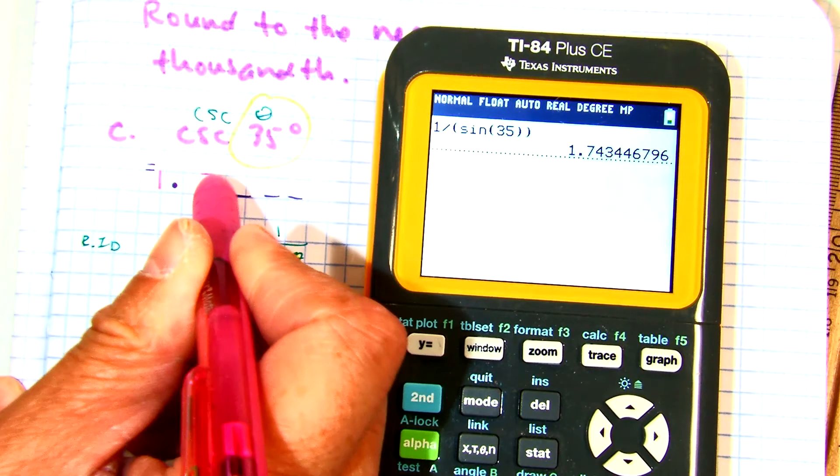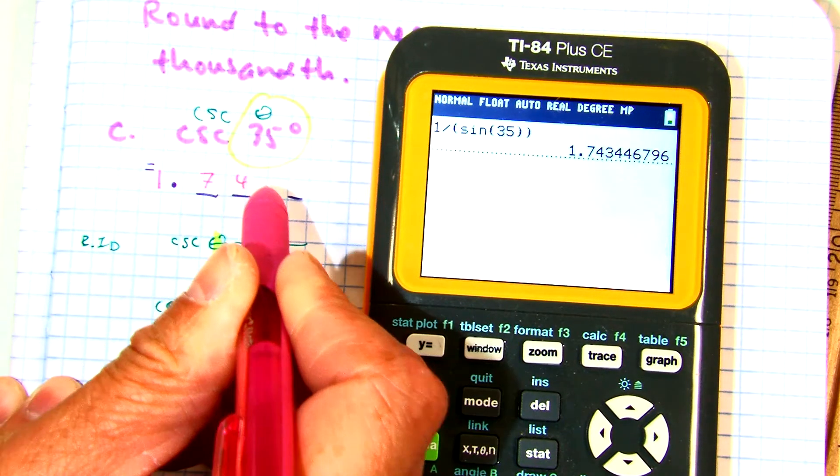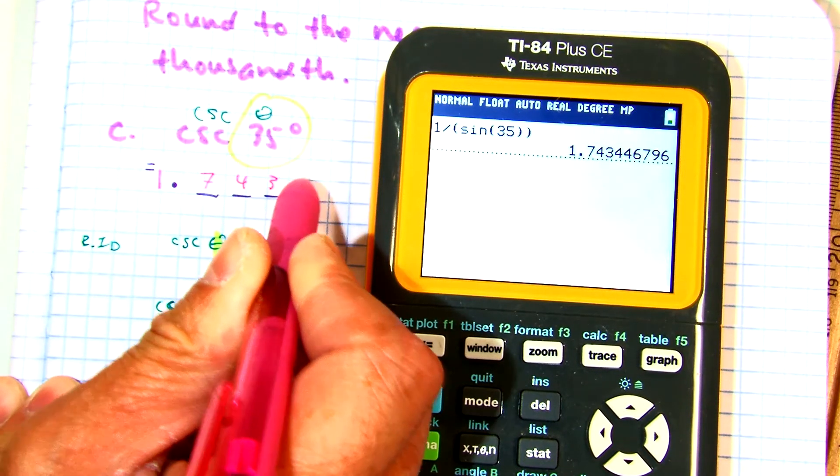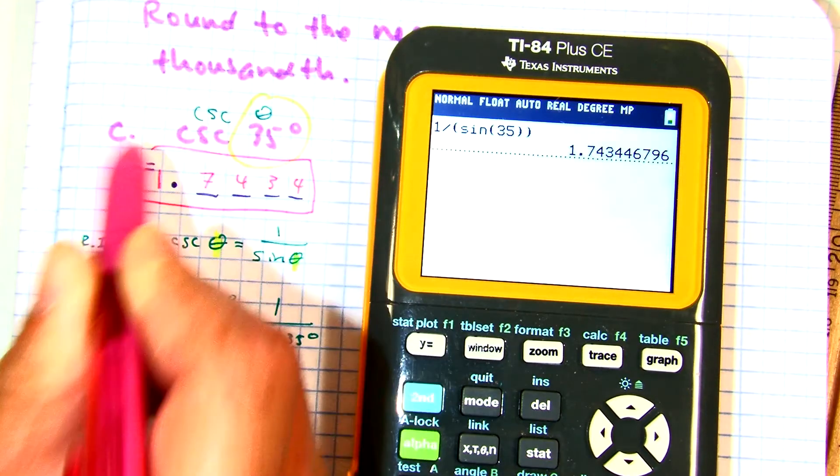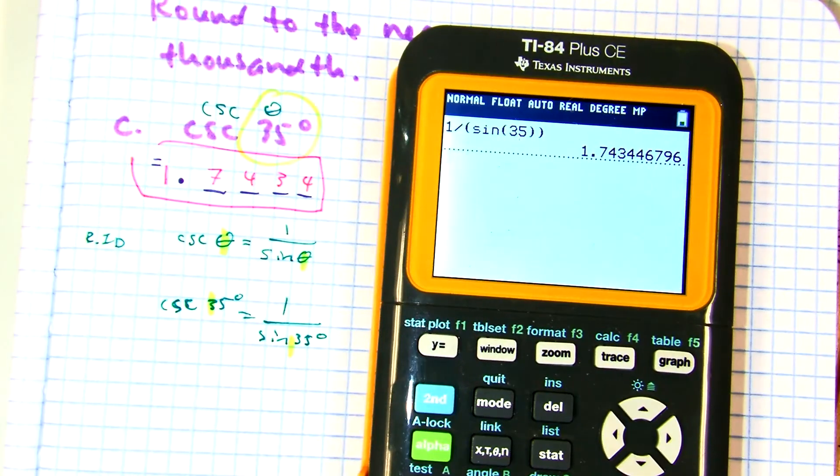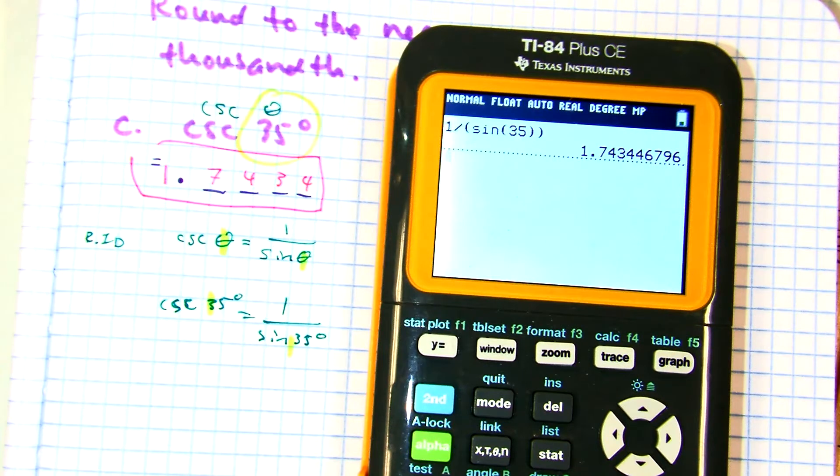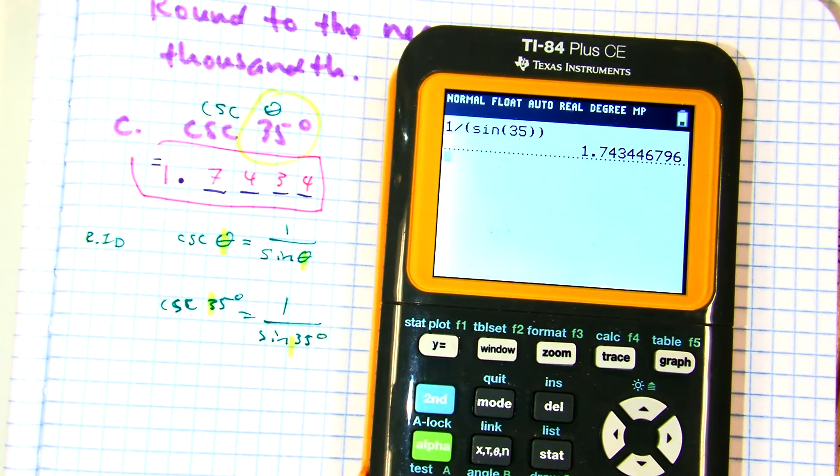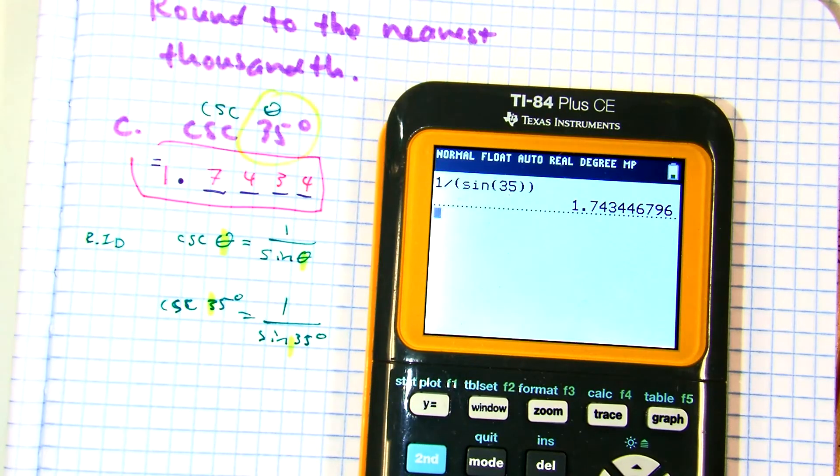1.7434. Raise your hand if you got that as your answer. Question? The nearest ten thousand is ten thousand. Oh, good job, you.